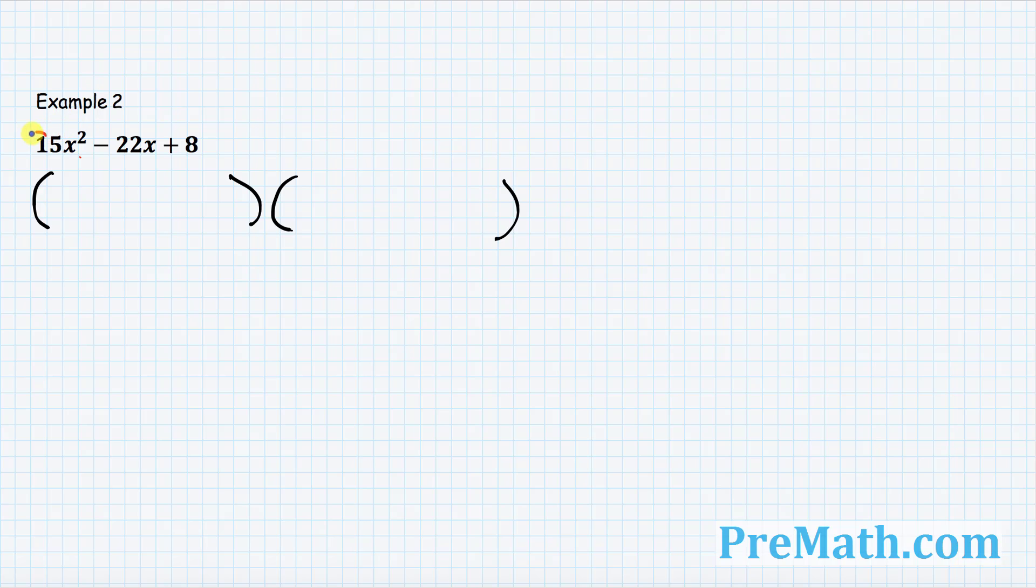You just put down two parenthesis. Second step. Write down 15x, this part only. 15x in the first parenthesis and 15x in the second parenthesis. Second step, multiply this 15 by this number 8. 15 times 8 is, of course, 120.